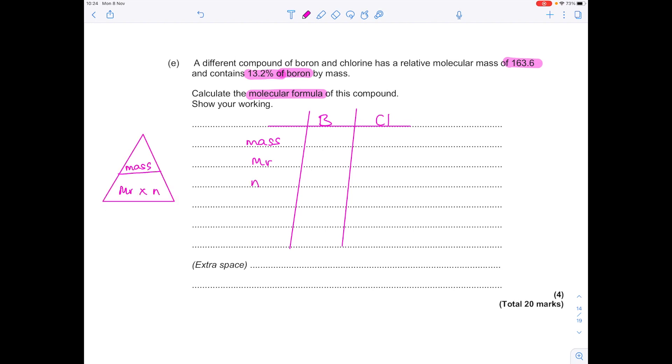Our boron mass, use that percentage. Remember, we're allowed to use that because it's effectively a proportion. Because percentages add up to 100, we're going to do 100 minus 13.2 to get 86.8 for chlorine. Find their relative atomic mass from the periodic table. For boron, that's 10.8. For chlorine, that's 35.5. According to this triangle, the number of moles is mass divided by MR.